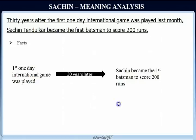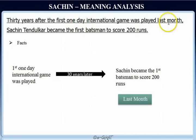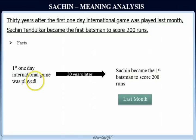The sentence also says this happened last month. From the meaning standpoint it's pretty clear, although we may debate about what 'last month' signifies here. If you read the sentence, it appears that 'last month' is talking about when the first one-day international game was played. But contextually, it doesn't make sense to say the first one-day international game was played last month, and then 30 years later Sachin became — the chronology of events doesn't make sense.